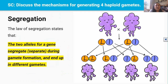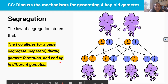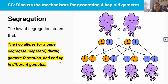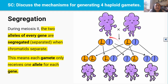Now let's talk about the second cause of genetic variation: segregation. Segregation is another word for separate. Organisms that reproduce sexually inherit at least two versions of a gene called alleles — for example the big L and the little L. The law of segregation states that the two alleles for a gene segregate or separate during gamete formation and end up in different gametes. Strictly speaking, this law of segregation is specific to alleles on homologous chromosomes, which is the opposite of independent assortment. During meiosis 2, the two alleles for every gene segregate randomly, and only one of each allele ends up in a gamete.